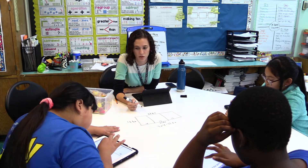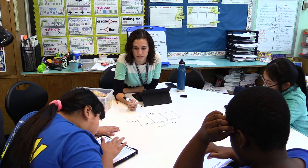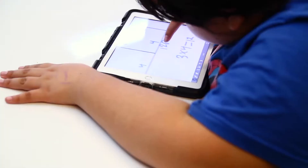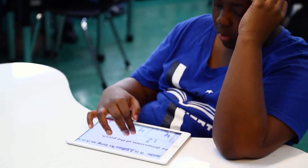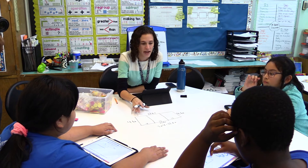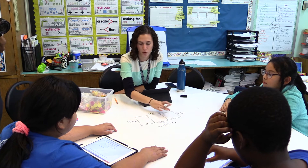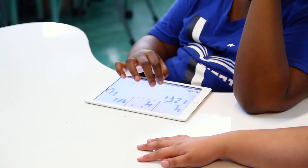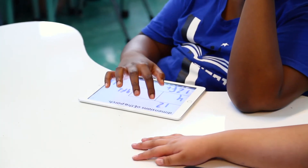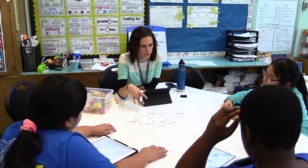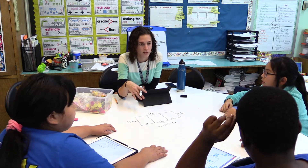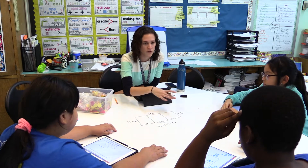We want the width labeled on both sides, and make sure you label your other length too. Go ahead and take a minute to do that. Now remind me — what's the length of our porch? Four feet. And what's the width of our porch? 12 feet. Now we want to find the perimeter of our porch.